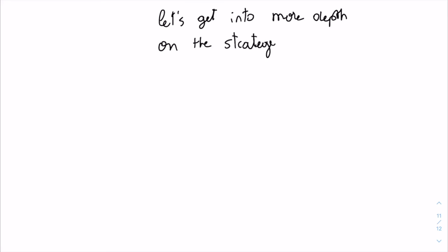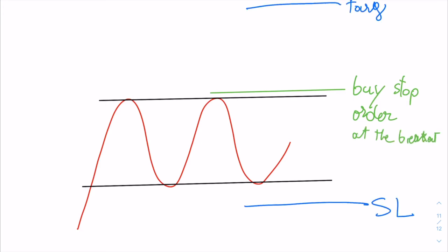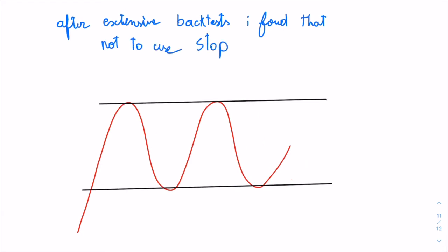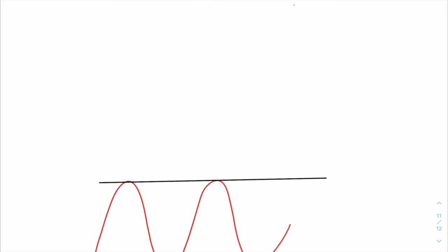Now we need to get into more depth on the strategy — where we set our profit taking, our stop loss, everything. After extensive backtesting, I found that the best way is not to use a stop loss and just sell the stock after 10 days. Because after it breaks, it does that short squeeze — the chance that it drops is much lower. So the best way I found is: no stop loss, sell after 10 days, and set a minimum profit-taking area of 10%.